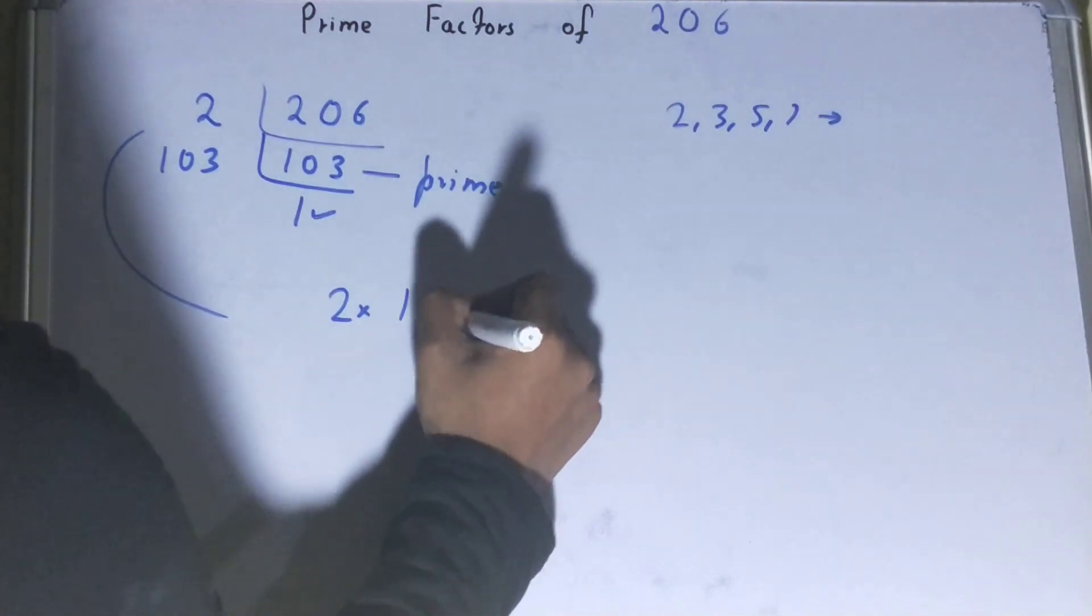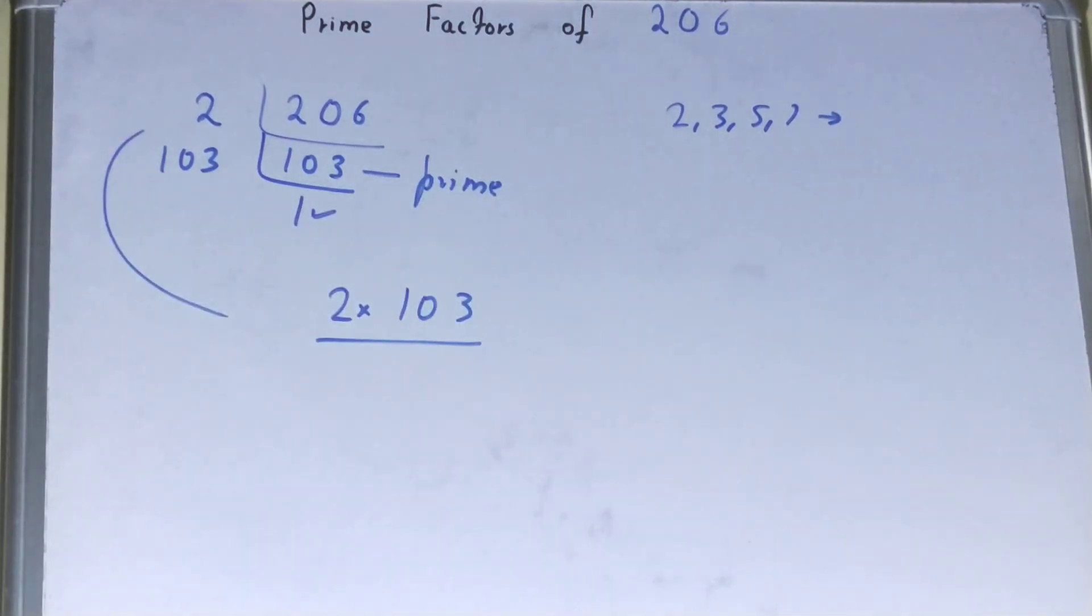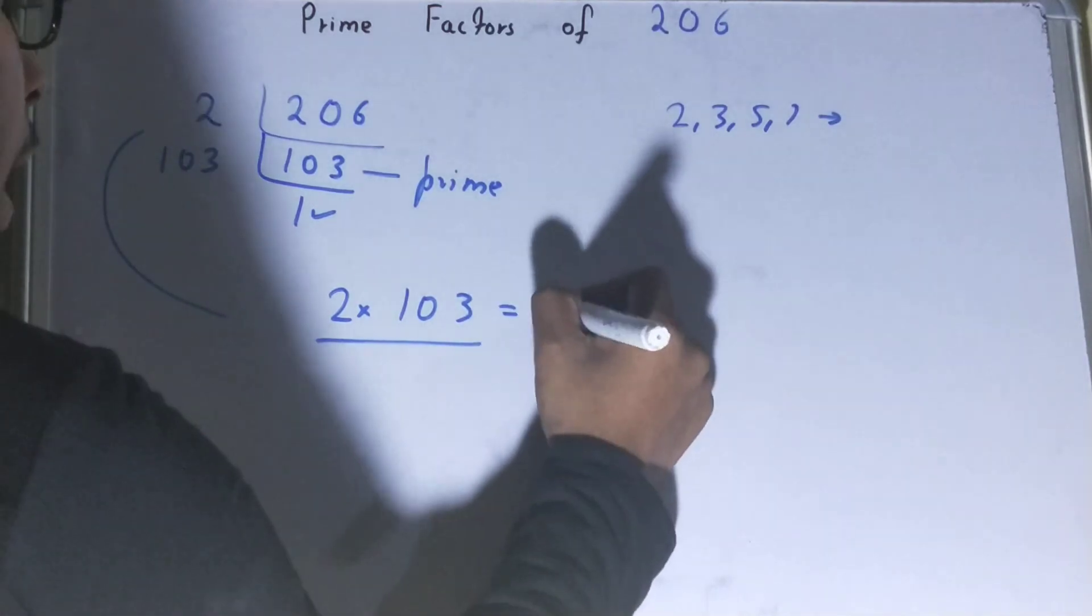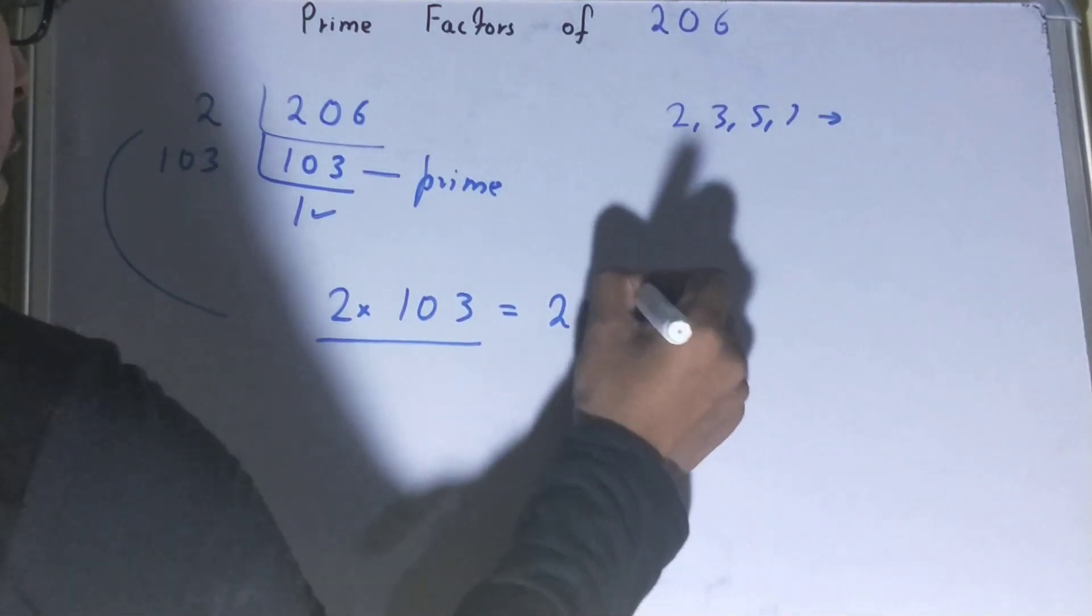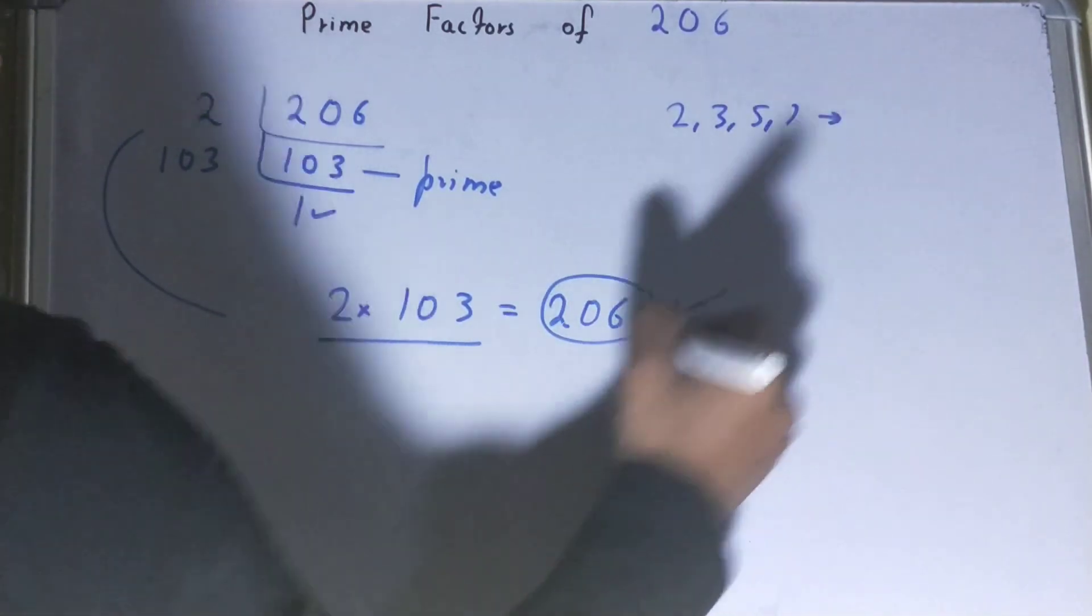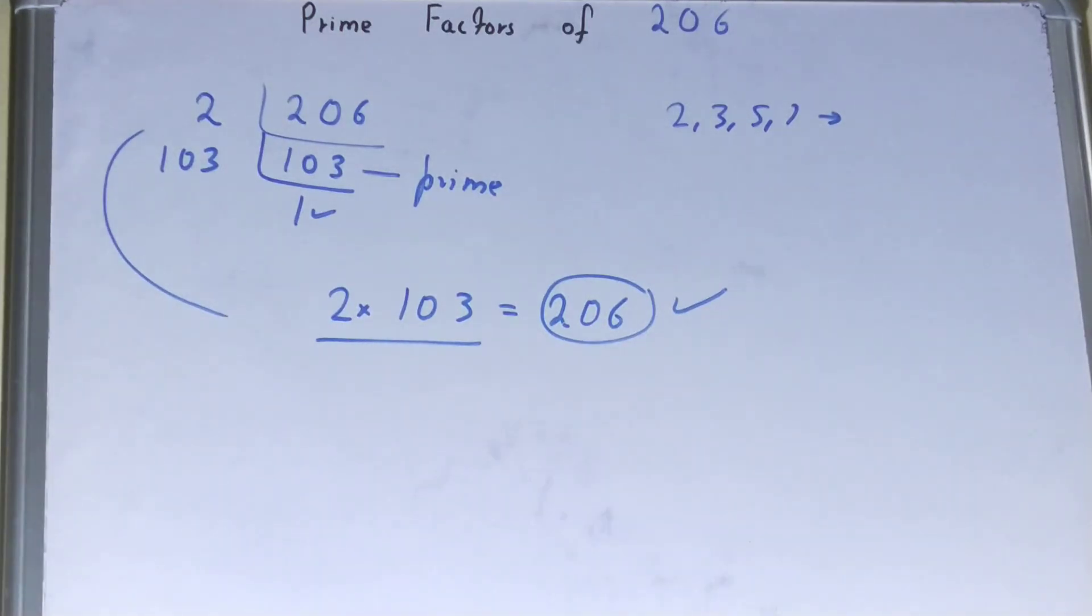That is 2 times 103. If you want to confirm whether it is right or not, you can multiply them, and if on multiplying you have the number back again, that means your calculation is correct. If not, you need to recheck.